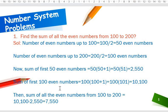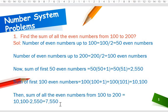Sum of first hundred even numbers equals hundred into hundred plus one, that is hundred into one hundred and one, which equals ten thousand one hundred. Therefore, the sum of even numbers from hundred to two hundred equals ten thousand one hundred minus two thousand five hundred and fifty.